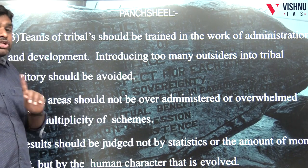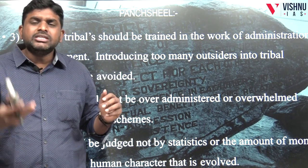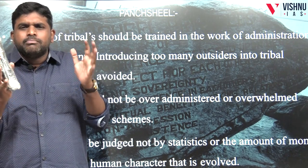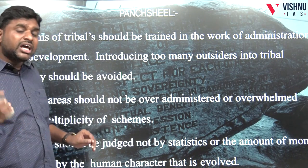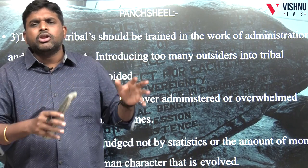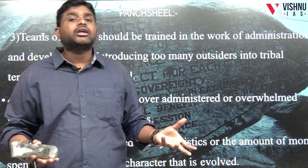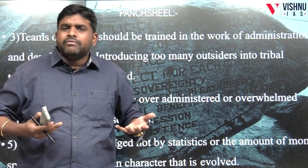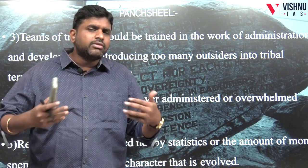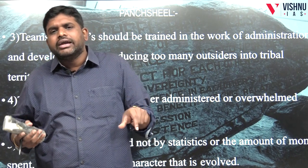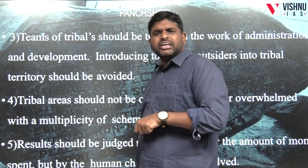The fourth point is that tribal areas should not be over-administered. That means we should not give them a multiplicity of schemes. We have to give them a minimum number of schemes, not multiple schemes. And we should not judge the results only by how much money was spent or how many schemes were given. We have to judge based upon the human character which is coming out — the development happening — how education, skill development, and health of tribal people have improved. This is the Panchasutra given in tribal Panchashil.